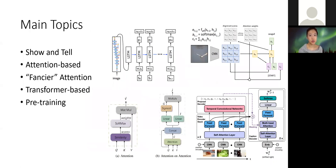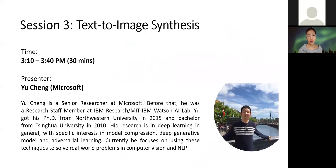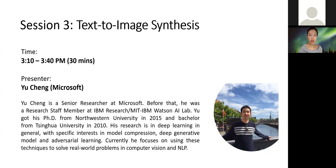In this session, we will introduce different schools of models for captioning tasks, from the classic encoder-decoder framework to attention-based models, the latest transformer-based models, and pre-training. Following this, we will have another session on generation tasks focusing on text-to-image synthesis. Yu Chen is the host of this session, who is a senior researcher at Microsoft. Before joining us, he was a research staff member at IBM Research. His research focus is deep learning in general, with specific interest in model compression, deep generative models, and adversarial learning.